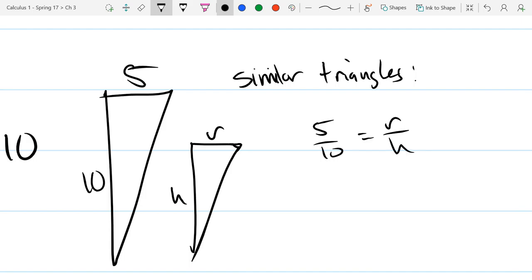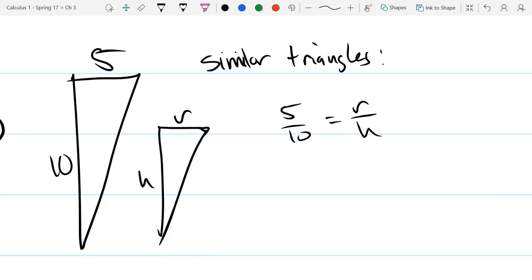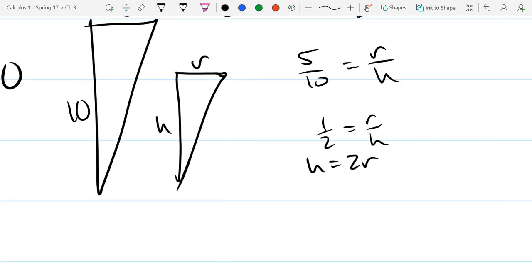They're the same triangle except one is scaled down or scaled up. So they're basically a scalar multiple of each other. So these are similar triangles. So this means 5 over 10 equals r over h. Basically, if you compare the radius to the height, this is saying that the radius should be half the size of the height. So we will reduce this. Let's do that cross multiplication. So we get h equals 2r.